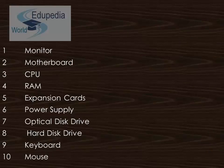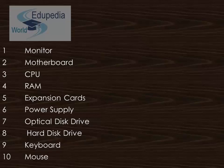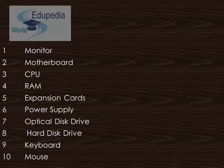To recap: label one is the monitor, label two is the motherboard, label three is the central processing unit, label four is random access memory, label five is expansion cards, label six is the power supply, label seven is the optical disk drive, label eight is the hard disk drive, label nine is the keyboard, and label ten is the mouse.